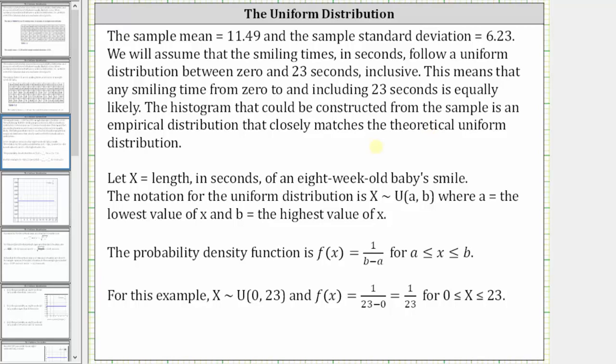We will let the random variable x equal the length in seconds of an eight-week-old baby's smile. The notation for a uniform distribution is shown here, where a is equal to the lowest value of x and b is equal to the highest value of x. The probability density function is f(x) equals 1 divided by the quantity b minus a.